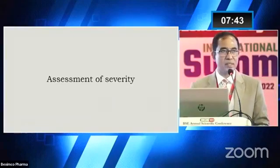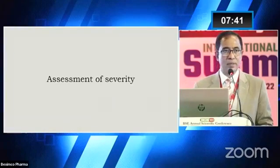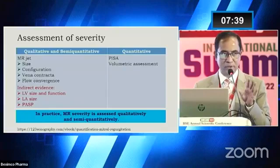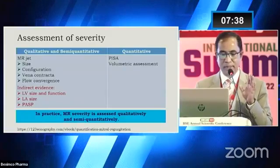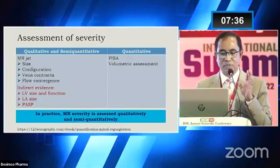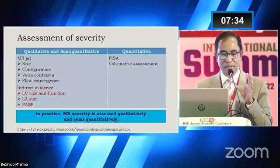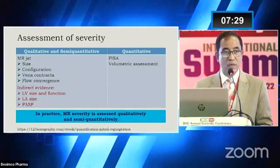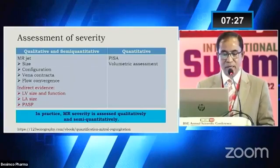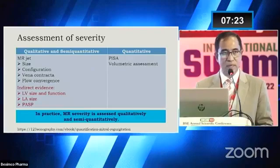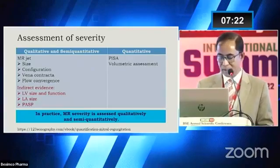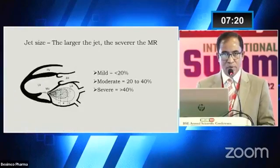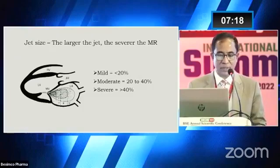Now we have to assess the severity of mitral regurgitation. There are many parameters, but practically we focus on the MR jet in terms of its size, configuration, vena contracta, and flow convergence. There are also certain indirect parameters like left ventricular size and function, left atrial size, and pulmonary pressure. We do not routinely rely on PISA and volumetric methods.